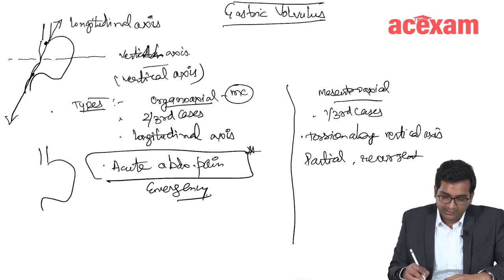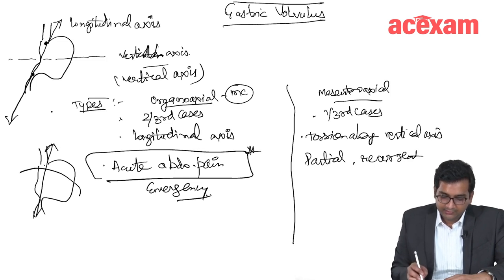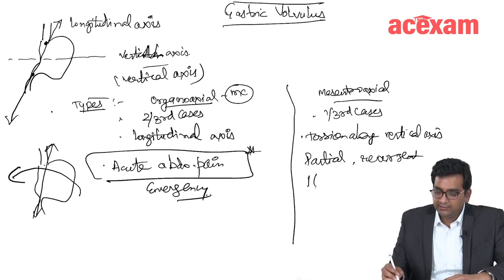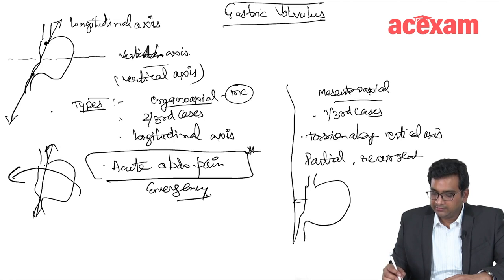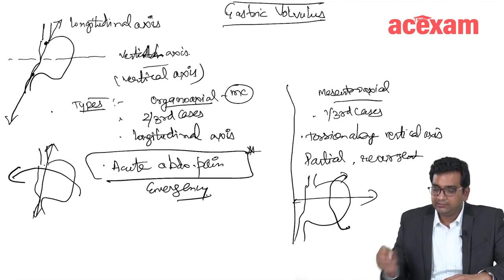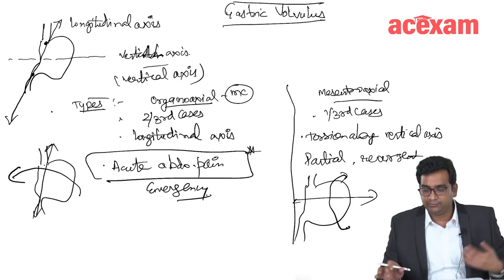If I explain with a diagram: for organoaxial, this is the normal longitudinal axis and the rotation occurs like this. Whereas in mesenteroaxial, this is the normal axis and the stomach occurs like this — it folds on its own. So the two types are organoaxial and mesenteroaxial.